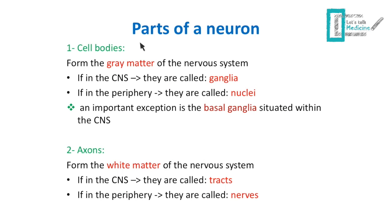Cell bodies actually form the gray matter of the nervous system. If those cell bodies are within the CNS, we call them nuclei, and if in the periphery we call them ganglia — an important exception being the basal ganglia, which is within the CNS but is still called ganglia. Axons form the white matter. If axons are within the CNS we call them a tract, and if within the periphery we call them nerves or nerve fibers.